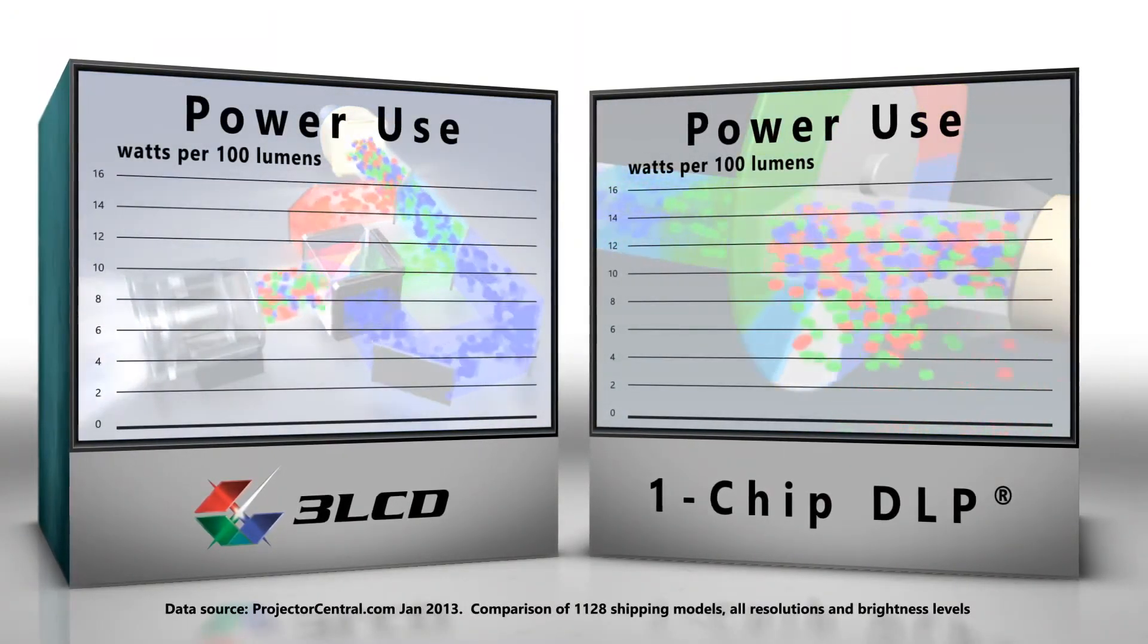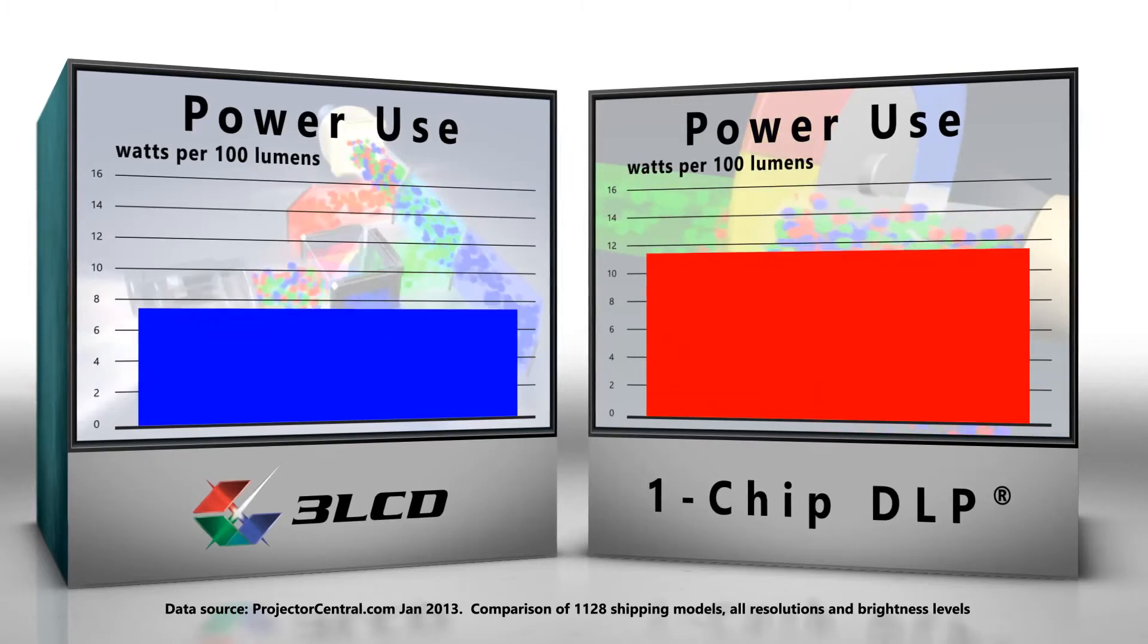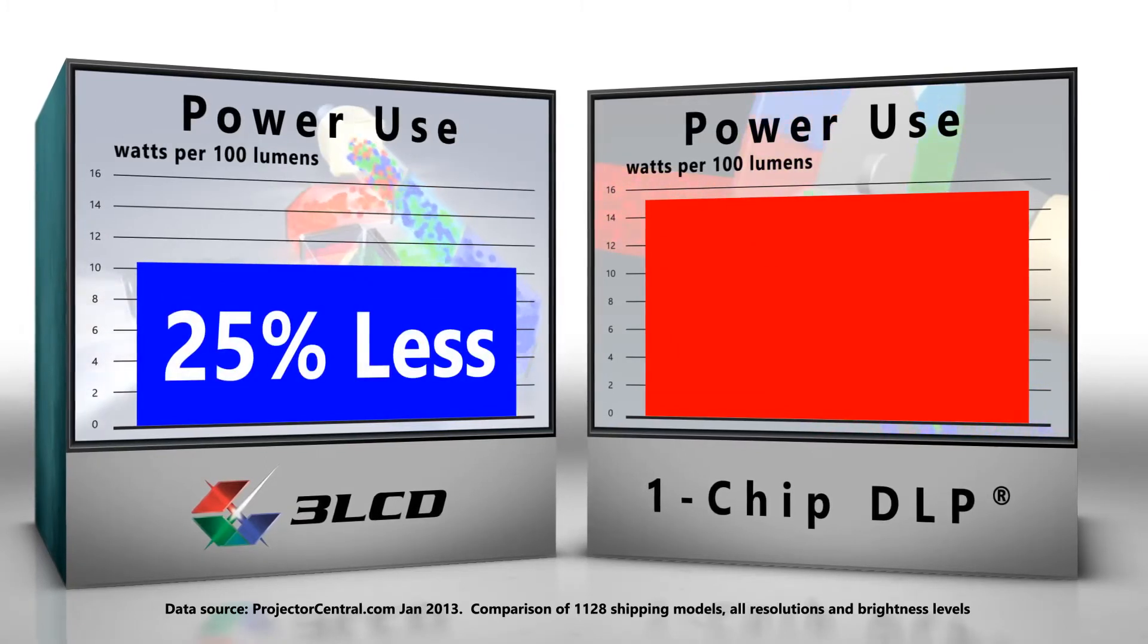Research shows that on average, 3LCD projectors use 25% less energy than one-chip systems.